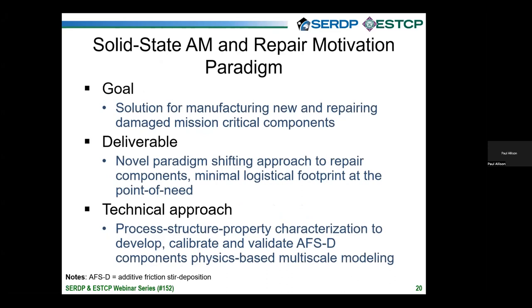In this program, we were tasked with using secondary feedstocks — waste range, battle damage equipment, and machining waste — to repair or manufacture new components in austere environments. We've proposed a paradigm shift in additive manufacturing and repair with a minimal logistical footprint, manufacturing at the point of need. Our technical approach looks at how processing influences the microstructure that evolves, imparting thermal cycles, and understanding properties from different feedstocks, enabling us to calibrate multi-scale modeling work.